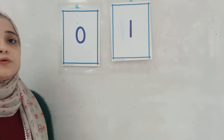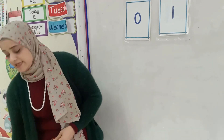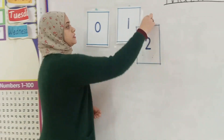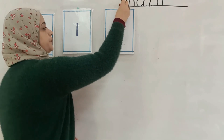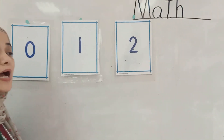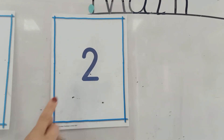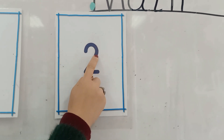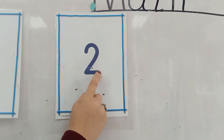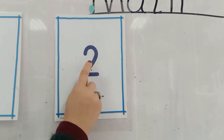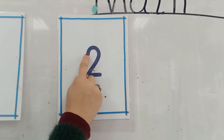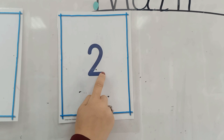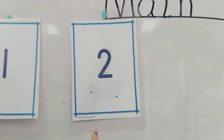What comes after number one? Yes, two. Number two. How do we write number two? Starting point, half a heart and sleeping stick. Again, starting point, half a heart and sleeping stick. Excellent.